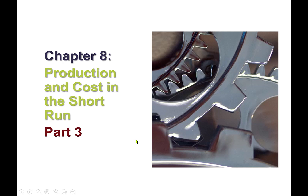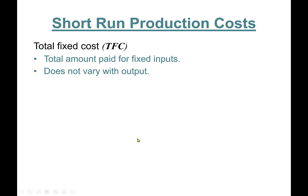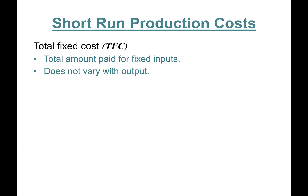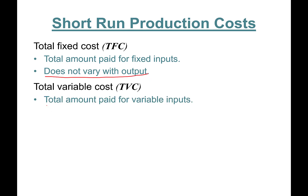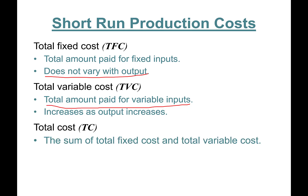Hello, welcome back. This is Chapter 8, Part 3. In this part we'll learn about calculating total fixed cost, total variable cost, and total cost. Total fixed cost is the total amount paid for the fixed inputs of production and does not vary with output. Total variable cost is the total amount paid for variable inputs. Total cost is the sum of these two.